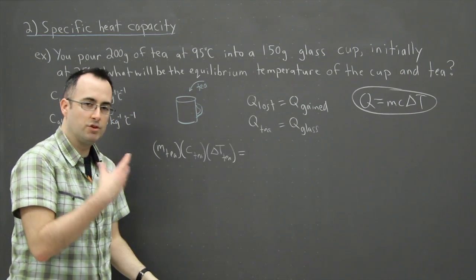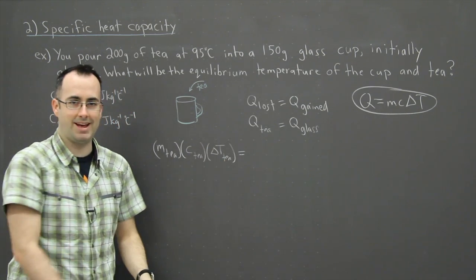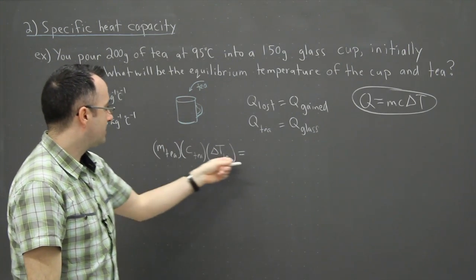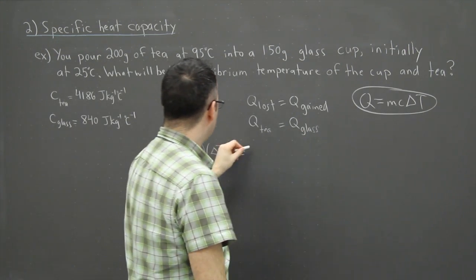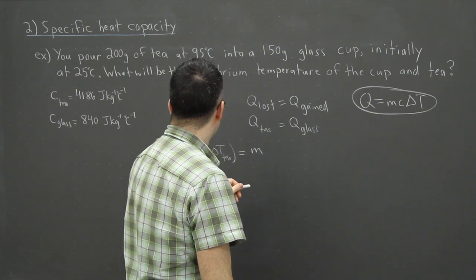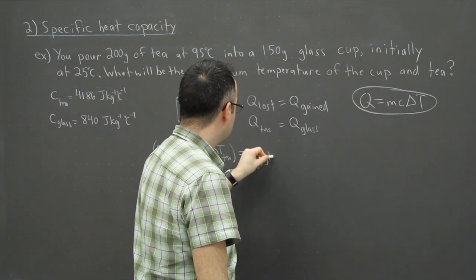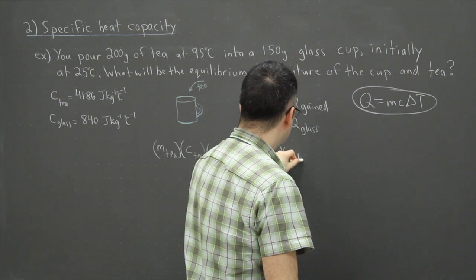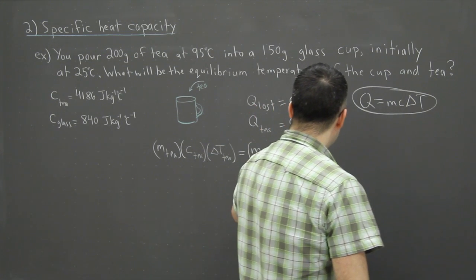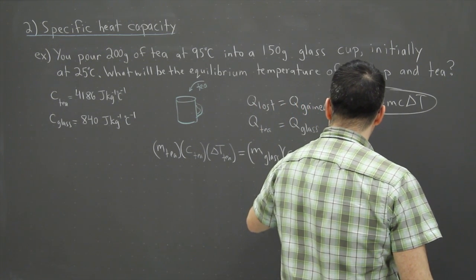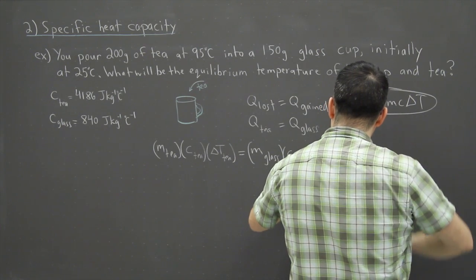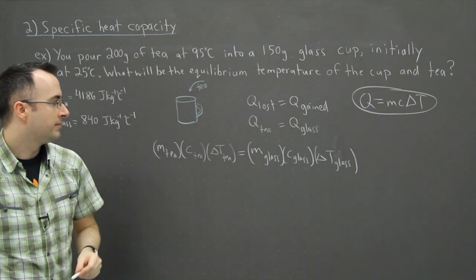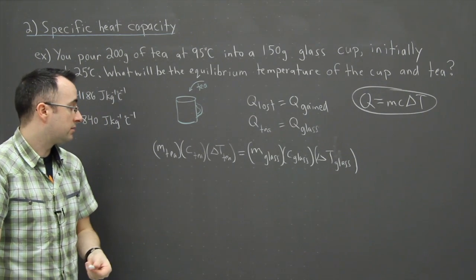That sounds confusing if you're just hearing it, delta T T, but I mean we're drinking some tea here. So that's going to be the same as what's gained: m_glass × C_glass × ΔT_glass. That's what we have to figure out.